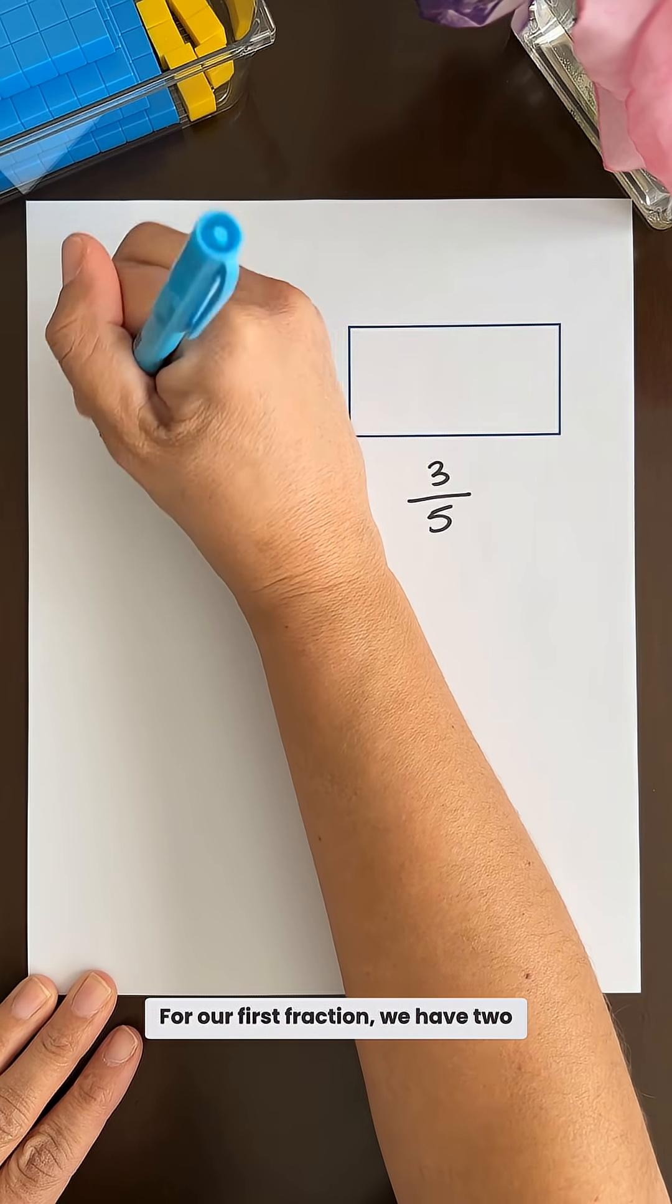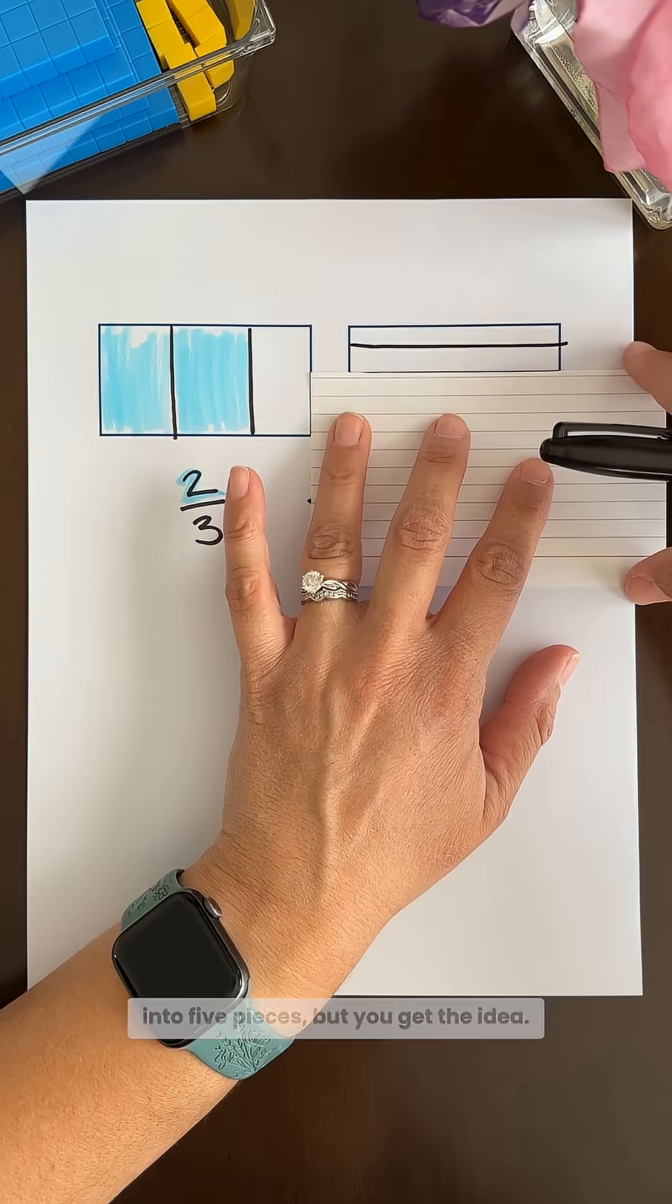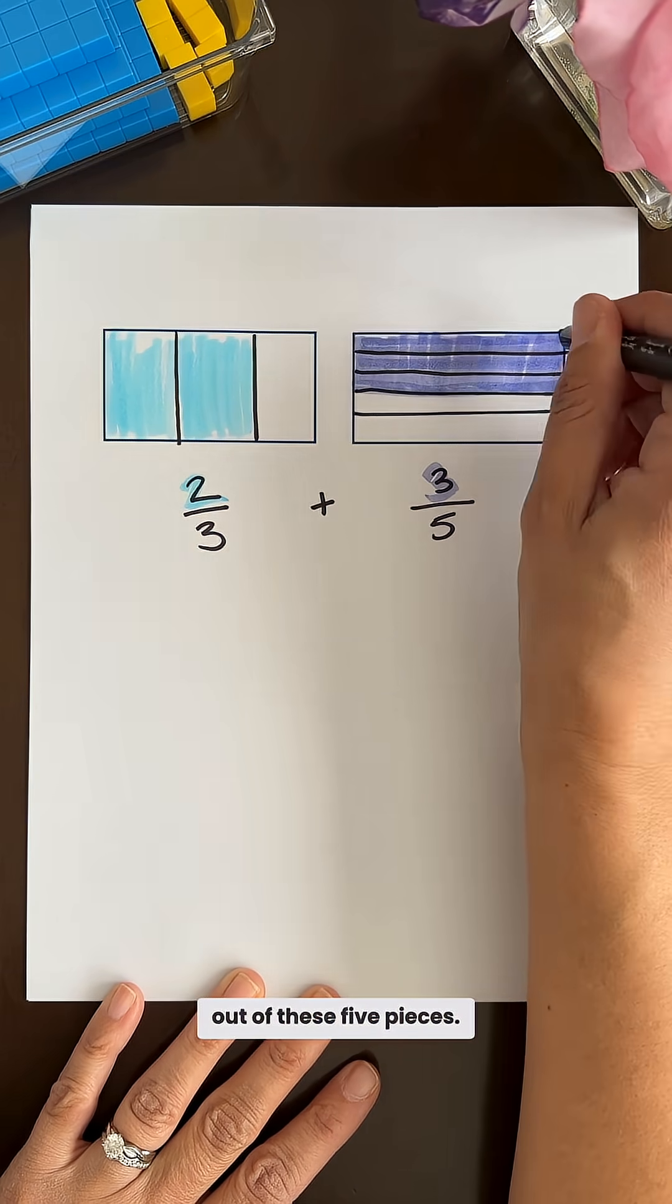For our first fraction we have two out of the three pieces. I did a horrible job splitting this rectangle into five pieces but you get the idea. Our numerator tells us that we have three out of these five pieces.